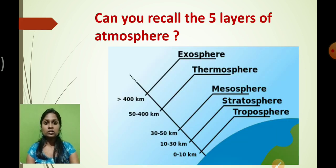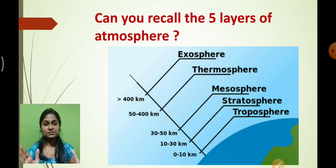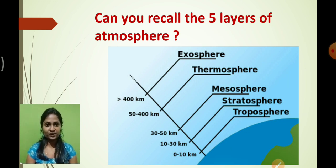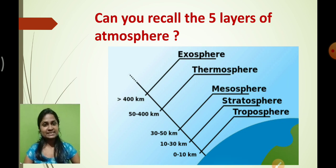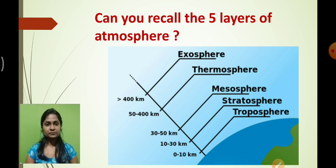In the atmosphere, there are basically three spheres present around the earth. Can you recall what they are? The three spheres are: atmosphere — the air present around the earth; lithosphere — the part of land on the earth; and hydrosphere — the part of water present on the earth.